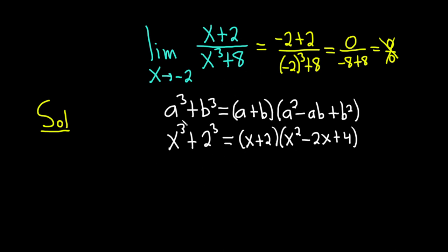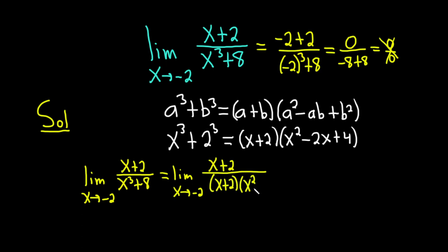Very nice. So you see now, the x plus 2s will cancel. Let's go ahead and write down our limit again. So we have the limit, as x approaches negative 2, of x plus 2, and it's all being divided by x cubed plus 8. This is equal to the limit, as x approaches negative 2, of x plus 2 over this factorization. So instead of x cubed plus 8, we have x plus 2 in parentheses, and then we have x squared minus 2x plus 4.